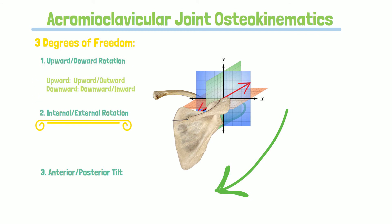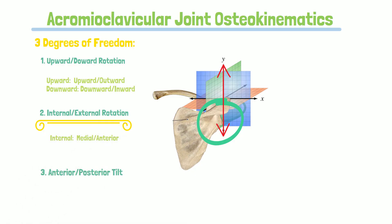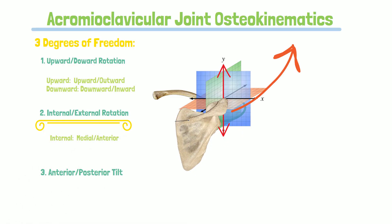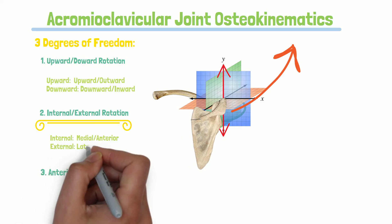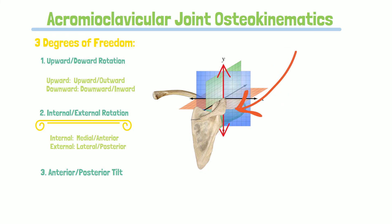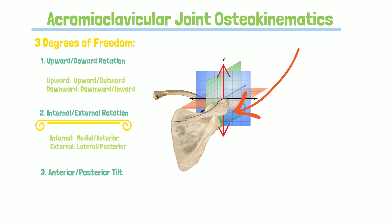Internal and external rotation are best visualized by following the glenoid fossa. It takes place around the y-axis. In order to achieve internal rotation, the glenoid of the scapula moves anterior and medial on a stationary clavicle. External rotation occurs when the glenoid moves posterior and lateral.